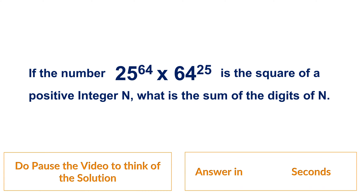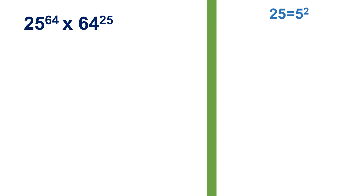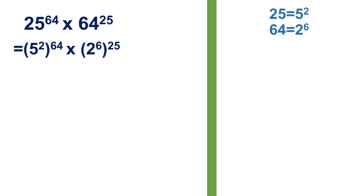I'll lead you towards the answer. We have 25 to the power 64 times 64 to the power 25. Because 25 is the square of 5 and 64 equals 2 to the power 6, we can write 25 as 5 squared and 64 as 2 to the power 6, and the expression becomes this. The question says the given expression is the square of integer n, so to find n we need to get this expression into the form of a complete square.